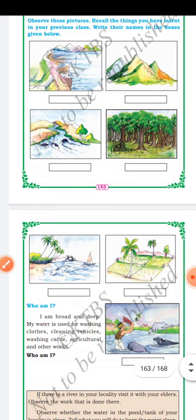Here is a riddle — listen. Who am I? I am broad and deep. My water is used for washing clothes and cleaning vehicles, washing cattle, agricultural and other works. Who am I? Any guesses? Yes, it is a river.